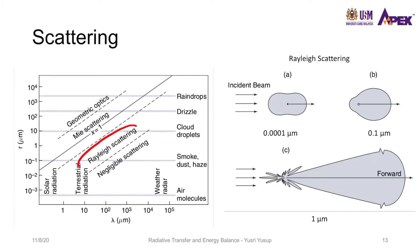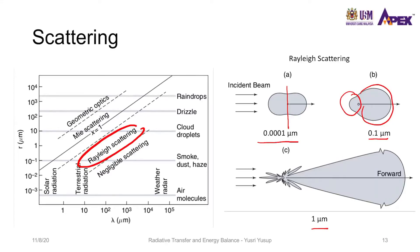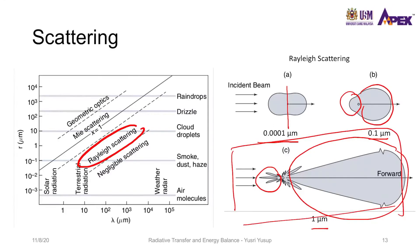Scattering depends on two parameters: the wavelength and the size. Using Rayleigh scattering as an example for a few sizes of gases and particles, as seen on the right of this figure, for very small molecules, the back scattering and forward scattering are negligible. But as the size increases to 0.1 micrometer, there is more forward scattering than back scattering. For much larger molecules or particles, there is considerable forward scattering relative to back scattering, causing a general considerable scattering of radiation.